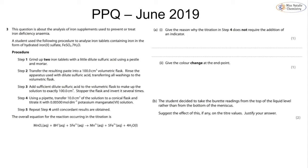Now let's look at a past paper question — the June 2019 paper. The method is essentially the same but with a few differences: iron sulfate is used this time, two iron tablets, a 100 cm³ volumetric flask, a 10 cm³ sample, and a potassium manganate concentration of 0.005 mol dm⁻³.